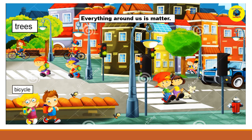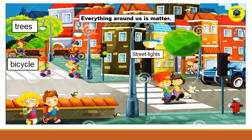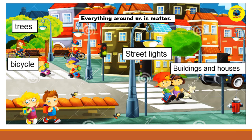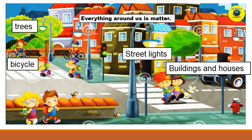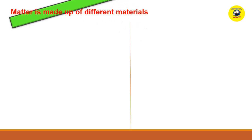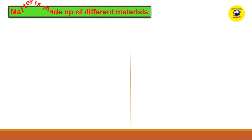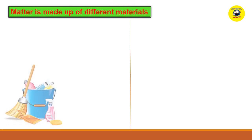The trees, the bicycles, the street lights, and even buildings and houses are made up of matter. The things that surround us are made up of matter. Matter is made up of different materials.